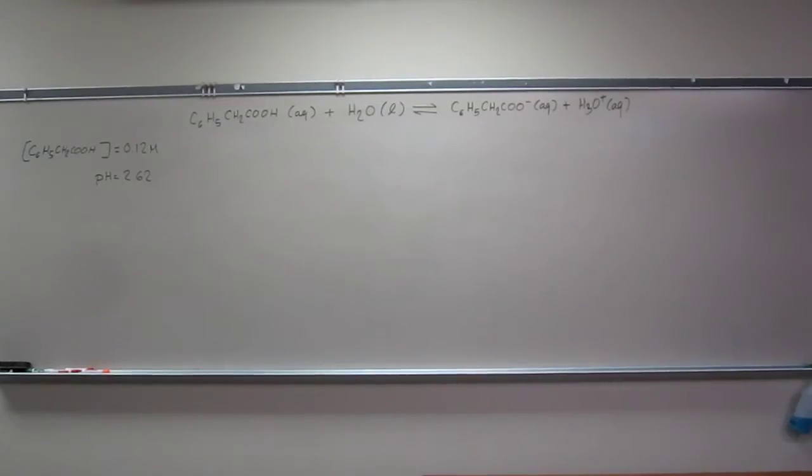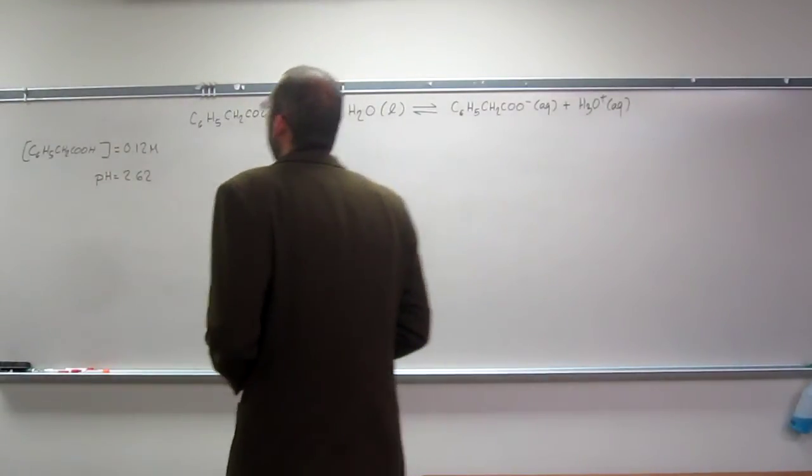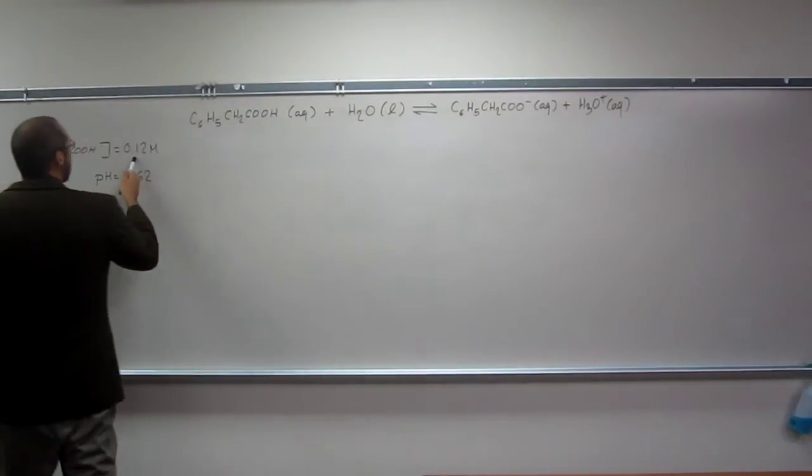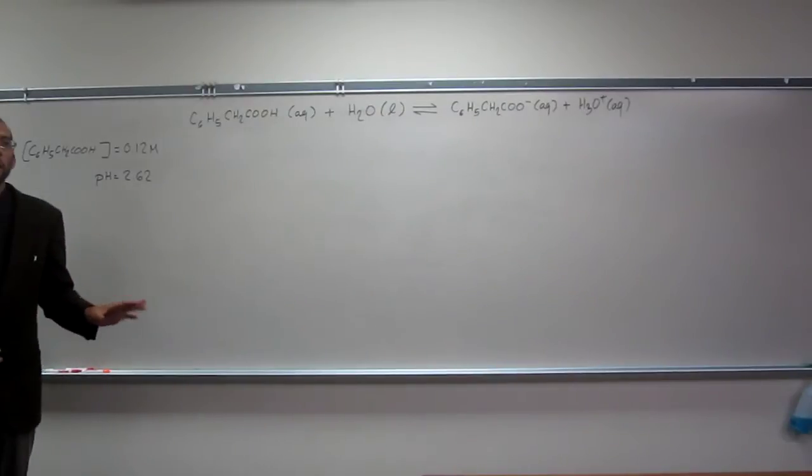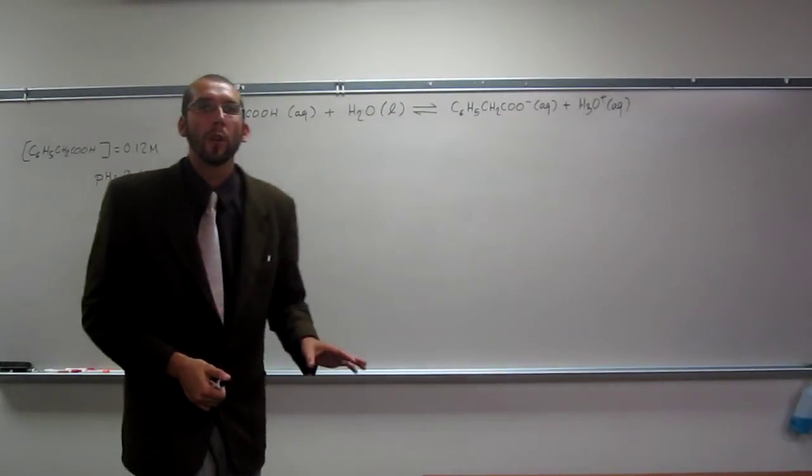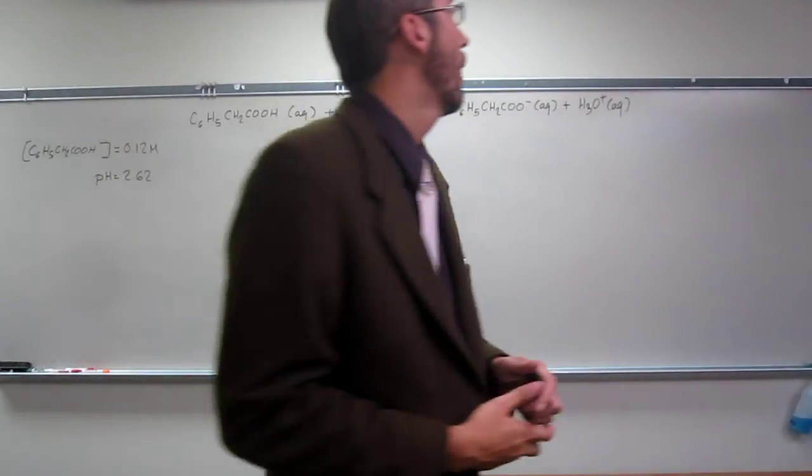So let's do one of these: finding the Ka of a weak acid from the solution pH and the initial concentration of the weak acid. In order to do these types of problems, you're going to have to set up an ICE table.